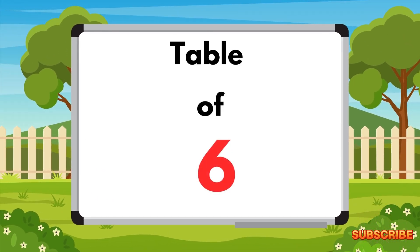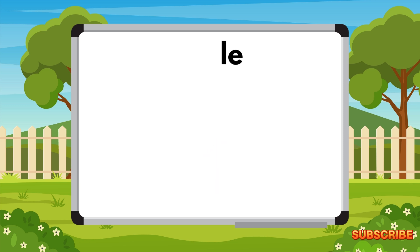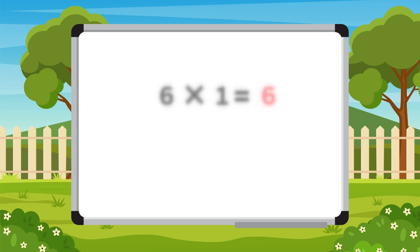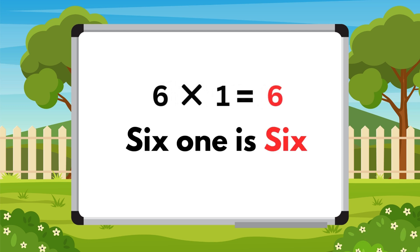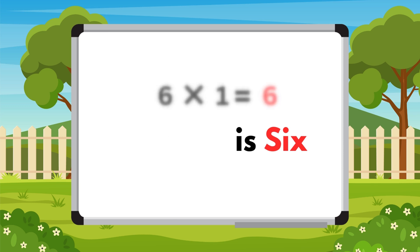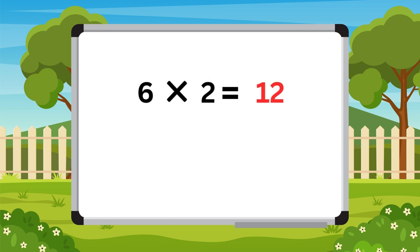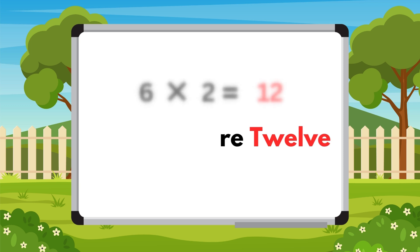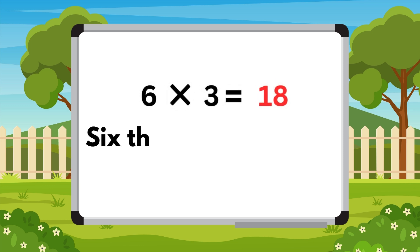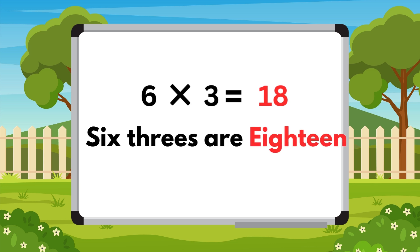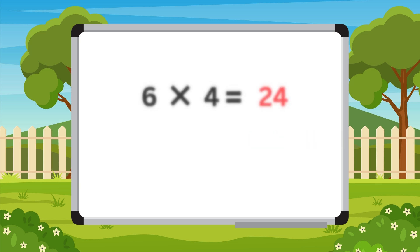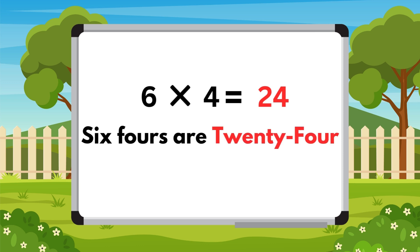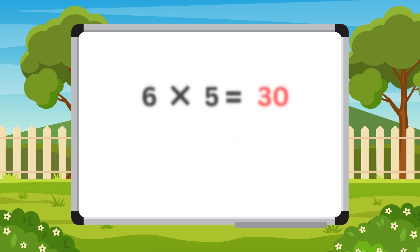Table of six. Six one is six. Six twos are twelve. Six threes are eighteen. Six fours are twenty-four. Six fives are thirty.